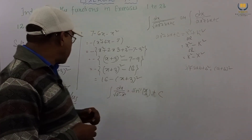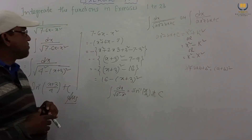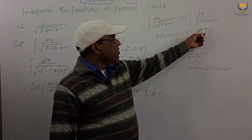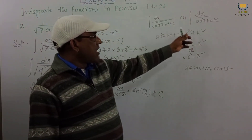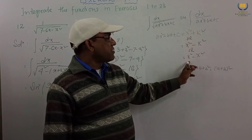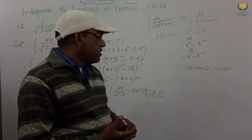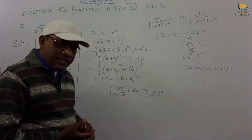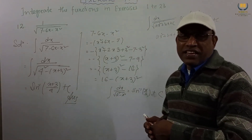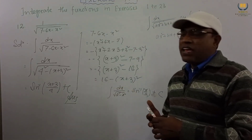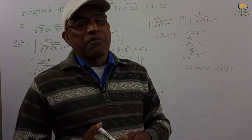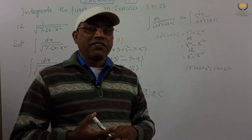So dear students, this is our nice solution — very easy. Just remember: if you get either this form or this form, then express as x square plus k square, x square minus k square, or k square minus x square. If you are finding this solution easy, please like this video. If you are new to my channel, please subscribe and click the bell icon. Thank you.